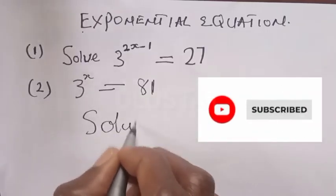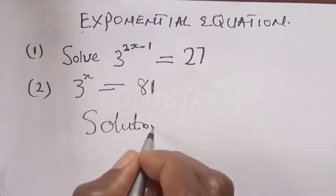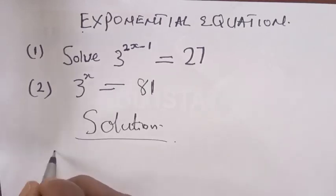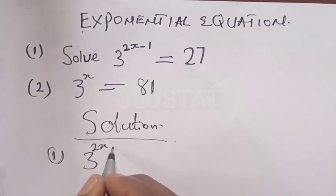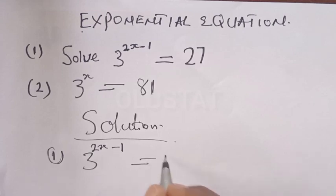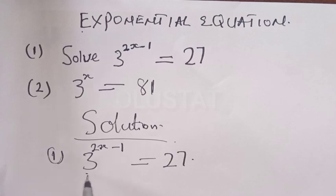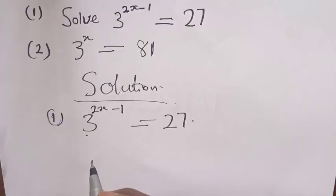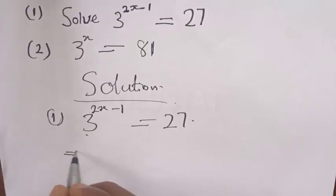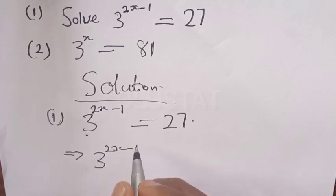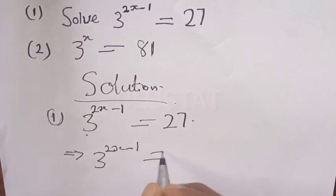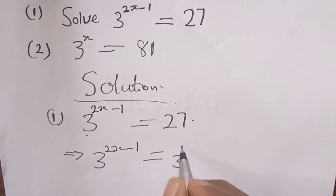Question number one says: solve 3 raised to power 2x minus 1 is equal to 27. This one has a base of 3 and this is 27. You have to make sure that you express this in the same base.